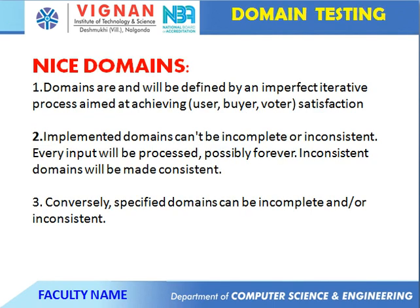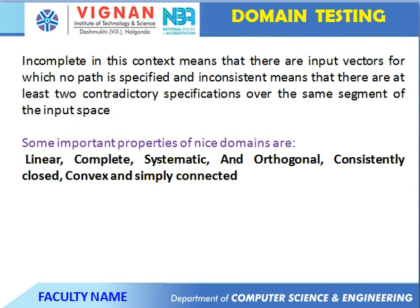Next one is nice domain. A nice domain's requirements will be defined by an imperfect iterative process aimed at achieving user satisfaction. Implemented domain cannot be incomplete or inconsistent — every input will be processed, possibly forever. Inconsistent domains will be made consistent. Some important properties of nice domain: they are linear, complete, systematic and orthogonal, consistently closed, convex, and simply connected.